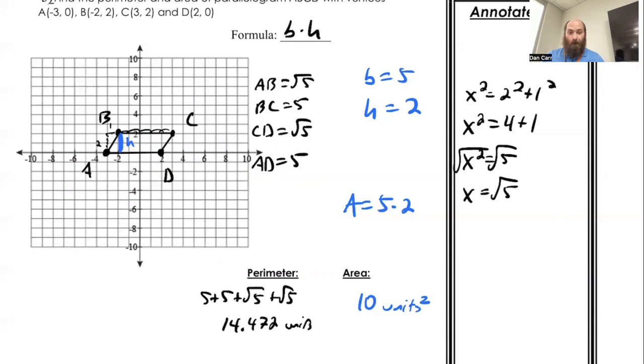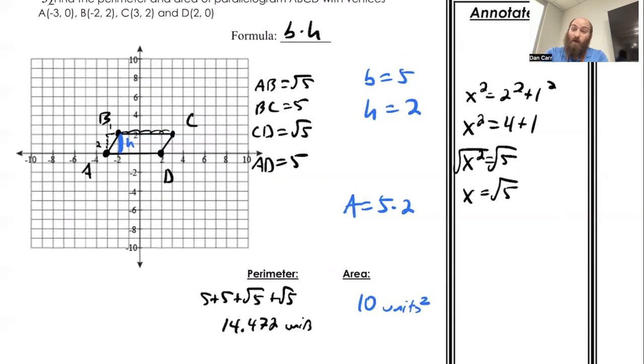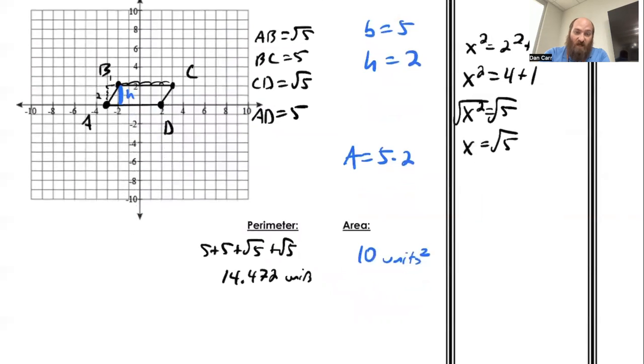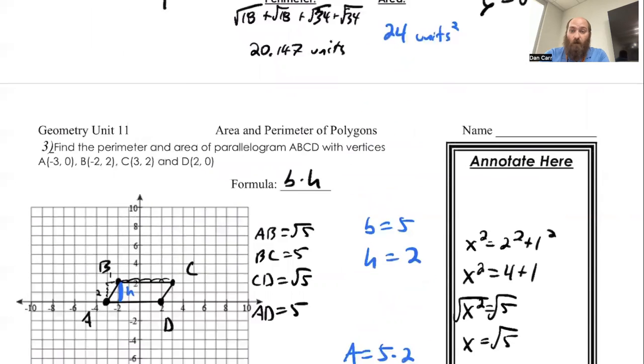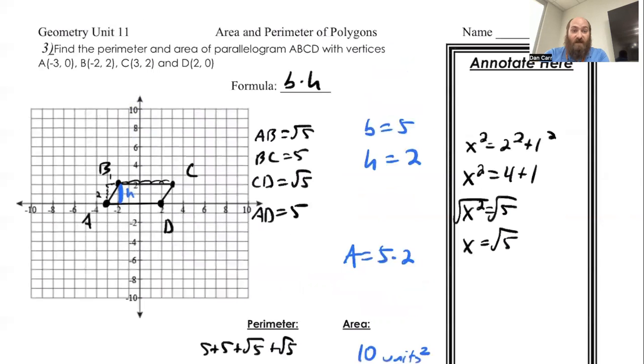And that's it. Three different examples. The key about area can be pretty quick and easy as long as you understand what you're looking for for the base times height. Pretty much all perimeters are the same. You're just going to calculate all four sides or three sides of the triangle, add them up in the end. Sometimes we get some decimal numbers. Sometimes there'll be whole numbers. Just depends on what you get. And that is it for 11.3. Take care, everybody. Bye.